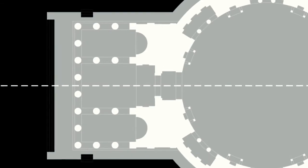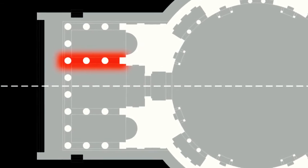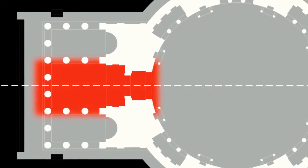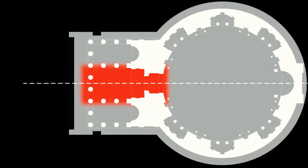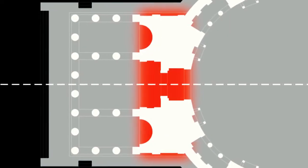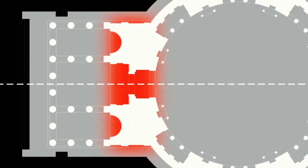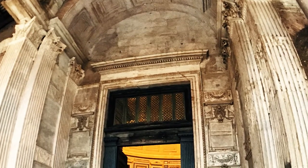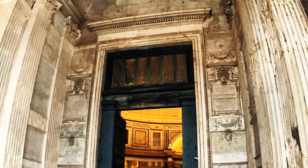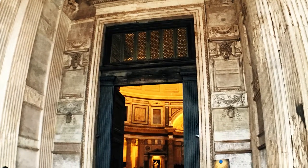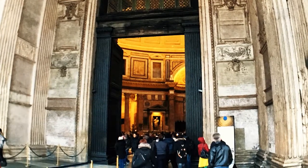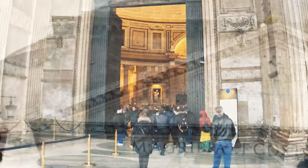In the interior of the portico, two rows of four columns divide the space into three naves. The central, wider nave leads to the great gateway to the cella or naos. The intermediate body is arranged as a point of articulation between the pronaos and the cella, framed by two pilasters attached to the large rotunda. It is a transition space — an extension of the central nave of the portico — which precedes the large volume found in the rotunda.